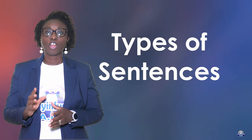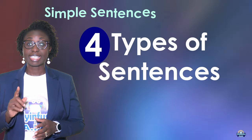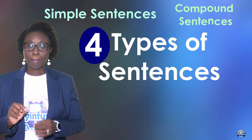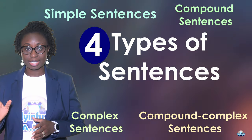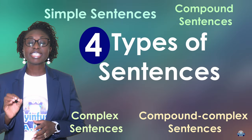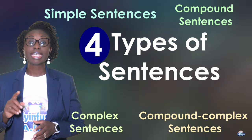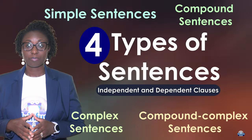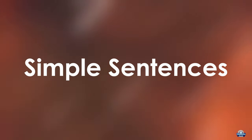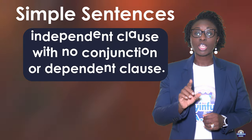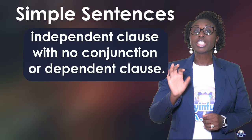Today we will be looking at types of sentences. There are four types of sentences: simple sentences, compound sentences, complex sentences, and compound-complex sentences. Each sentence is defined by the use of independent and dependent clauses, conjunctions, and subordinators. A simple sentence is an independent clause with no conjunction or dependent clause.